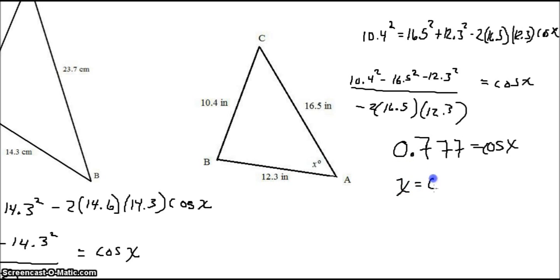So, 0.777 equals cosine of X. That means that X equals the inverse cosine of 0.777, which is about 39 degrees.